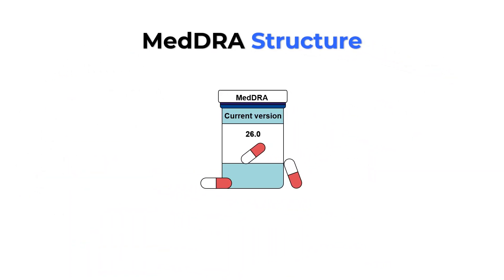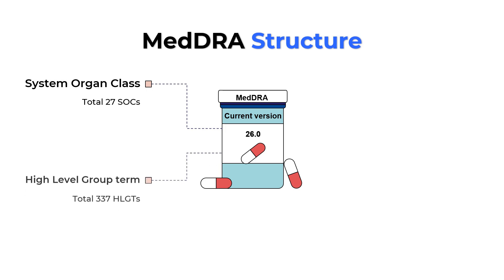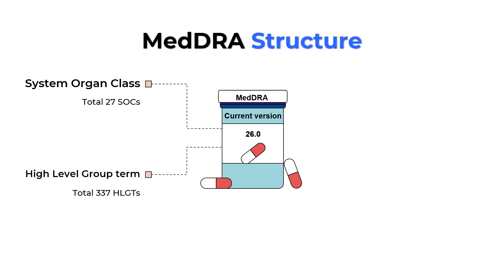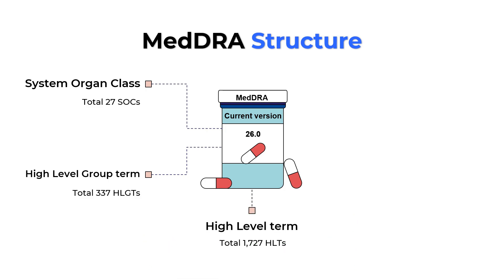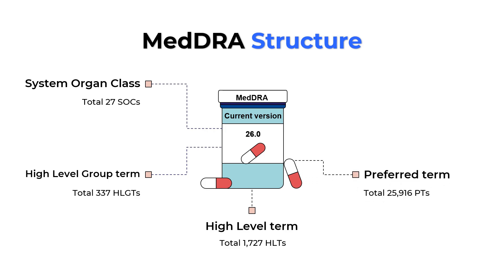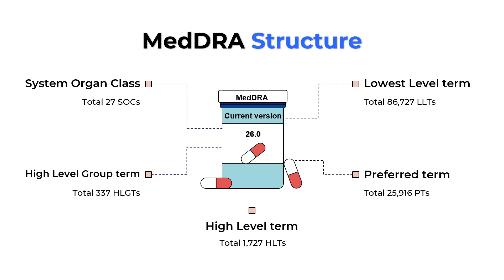Now let us understand the structure of MEDRA. The current version is version 26.0. MEDRA is divided into various classifications. The largest is the System Organ Class, of which there are 27. Below that are High Level Group Terms — there are 337 of those. Then come High Level Terms, of which there are 1,727. Below that are Preferred Terms — 25,916 of them. And finally, the lowest level terms, which number more than 86,000.